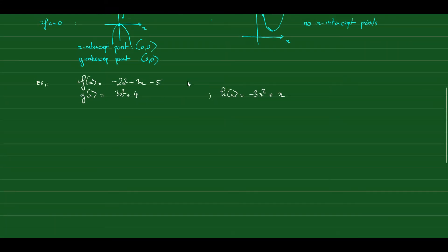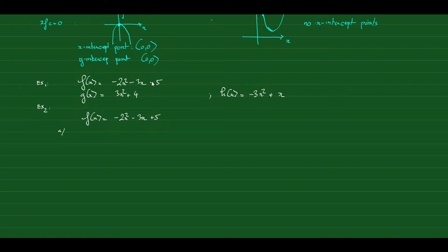Now let's work with this function: f(x) = −2x² − 3x + 5. We want to find the domain, the vertex point, the axis of symmetry, and the x and y intercept points. First, find the domain. Since this is a parabola, no matter whether it opens up or down, the domain of any parabola is always (−∞, +∞).